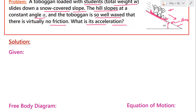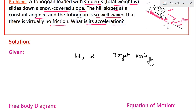Let us try to solve this problem. What are the things that are given? We have been given the weight of the toboggan, that is W, and we have been given the angle of inclination, alpha. The target variable — the unknown we have to find — is the acceleration of the toboggan. We can use Newton's second law, that is F = ma, to find the acceleration.